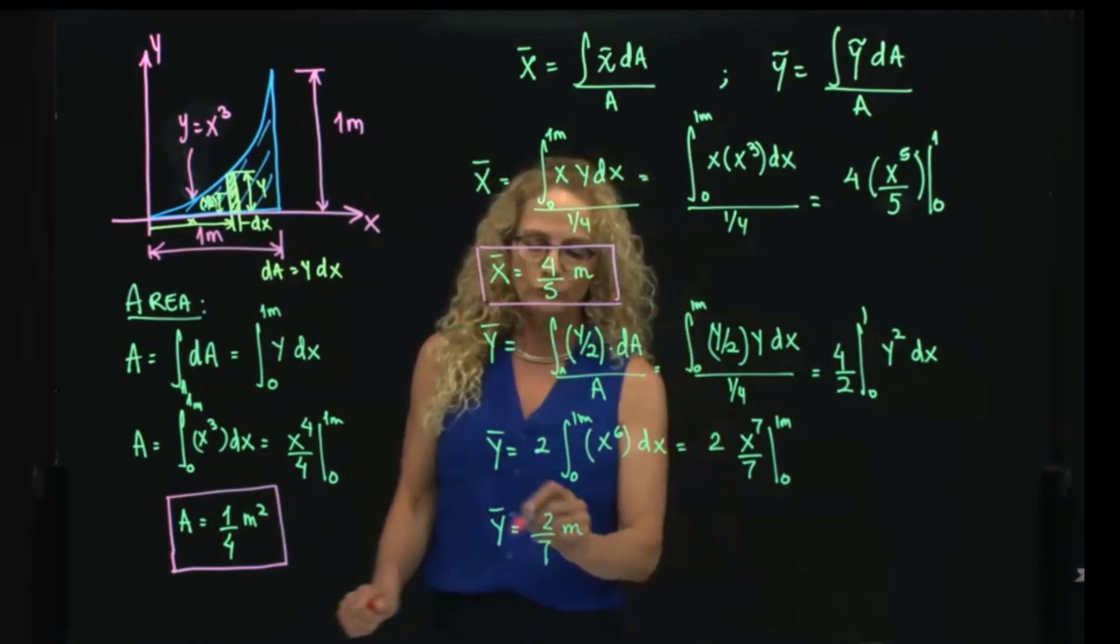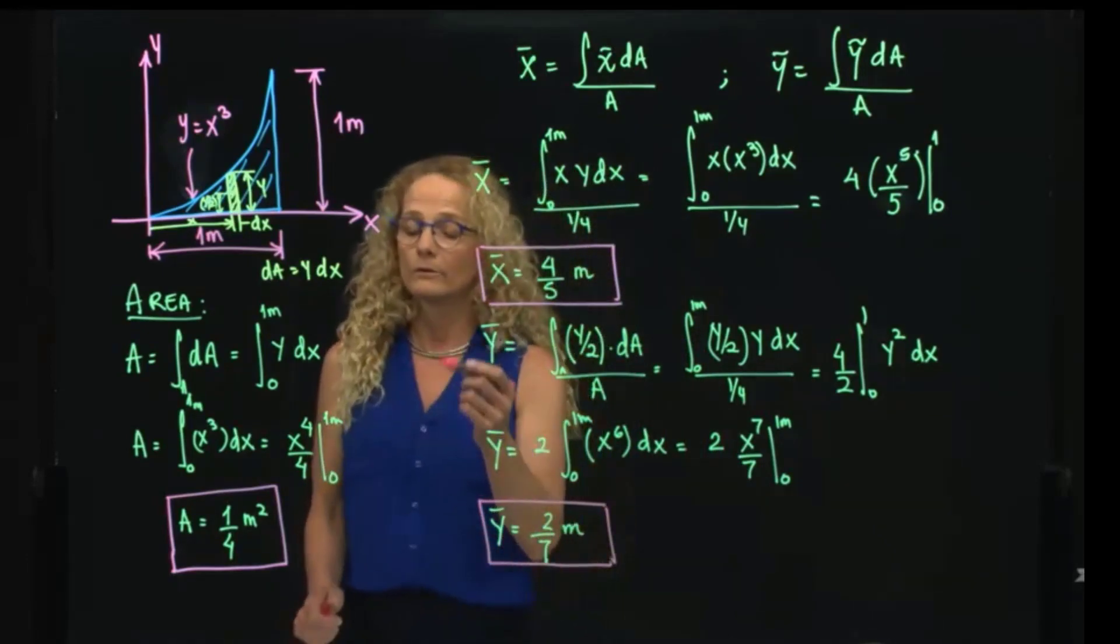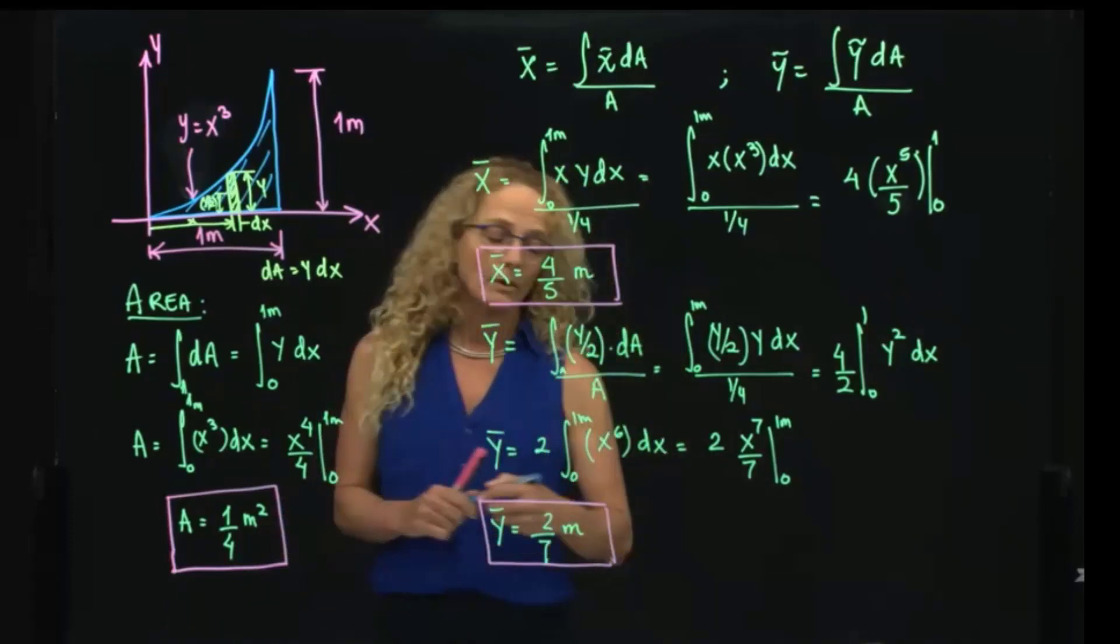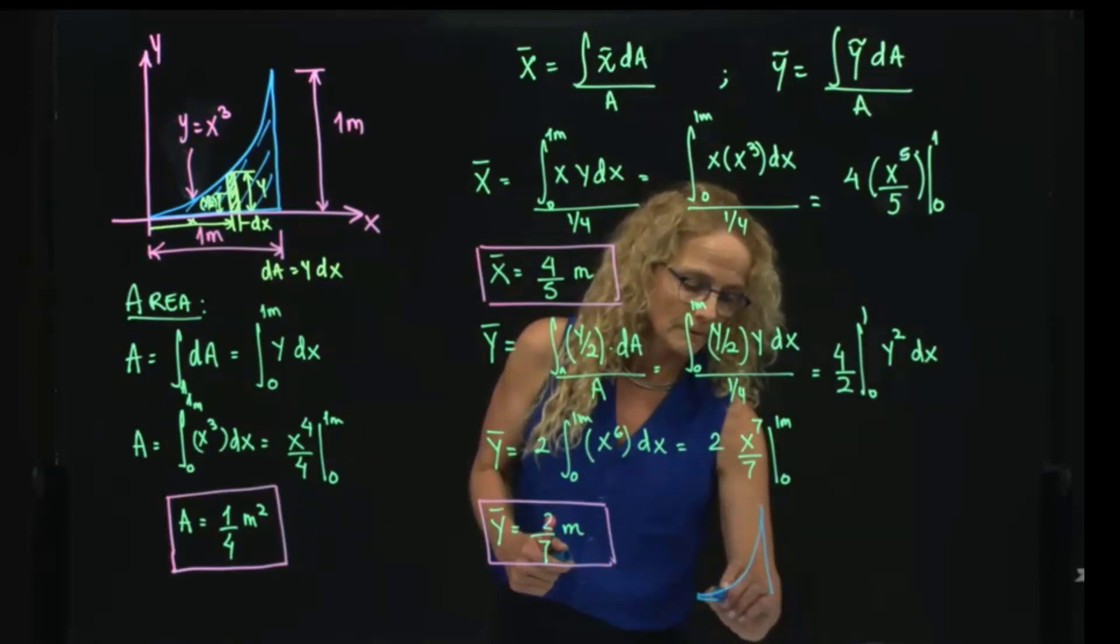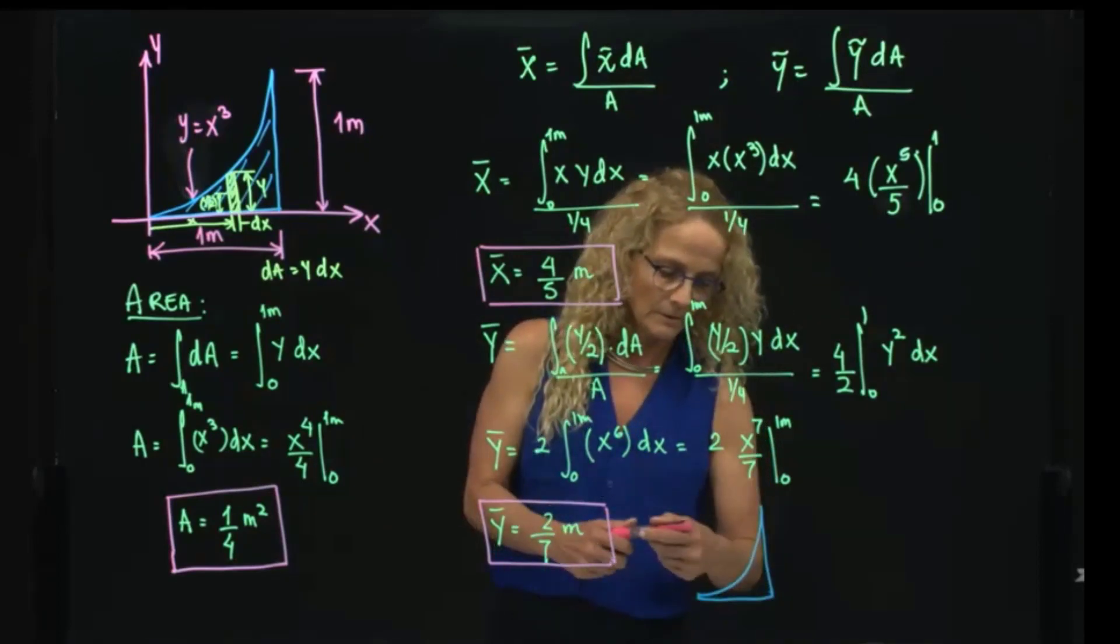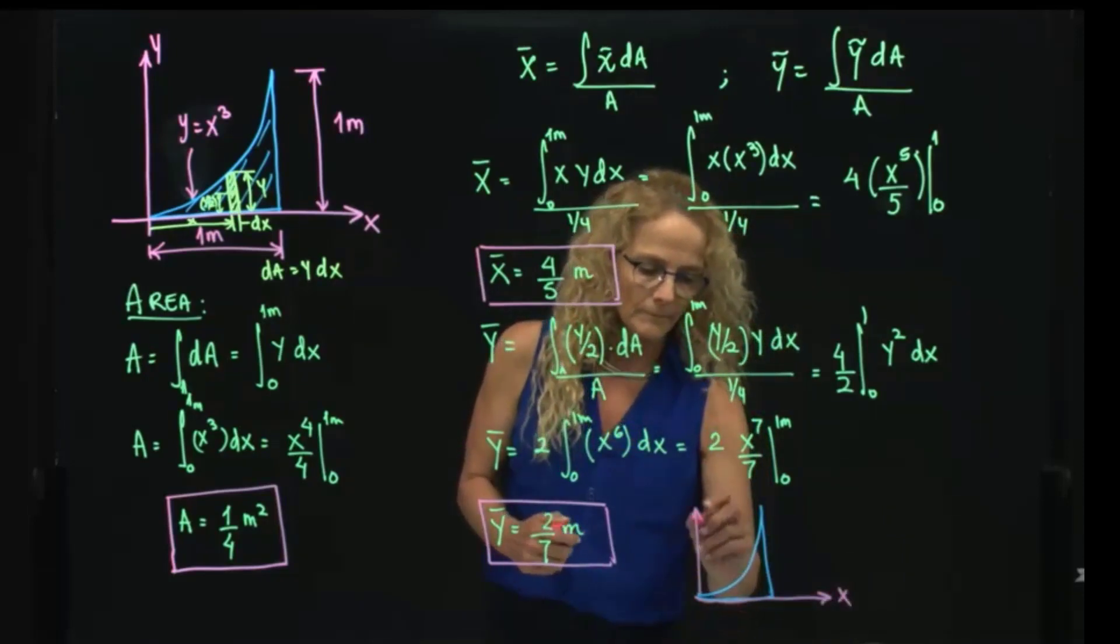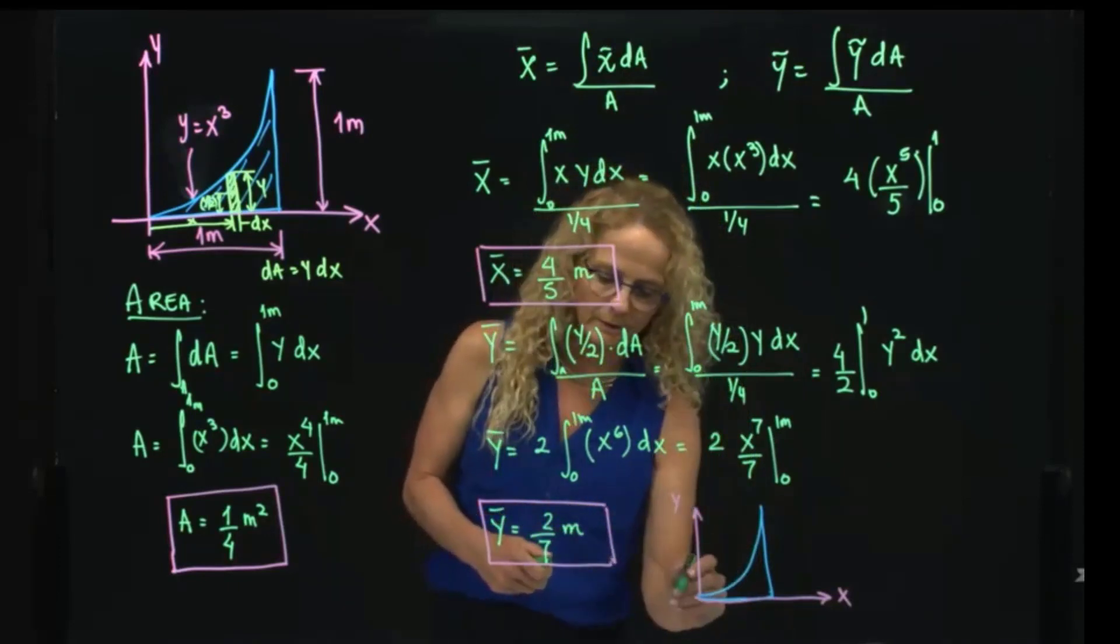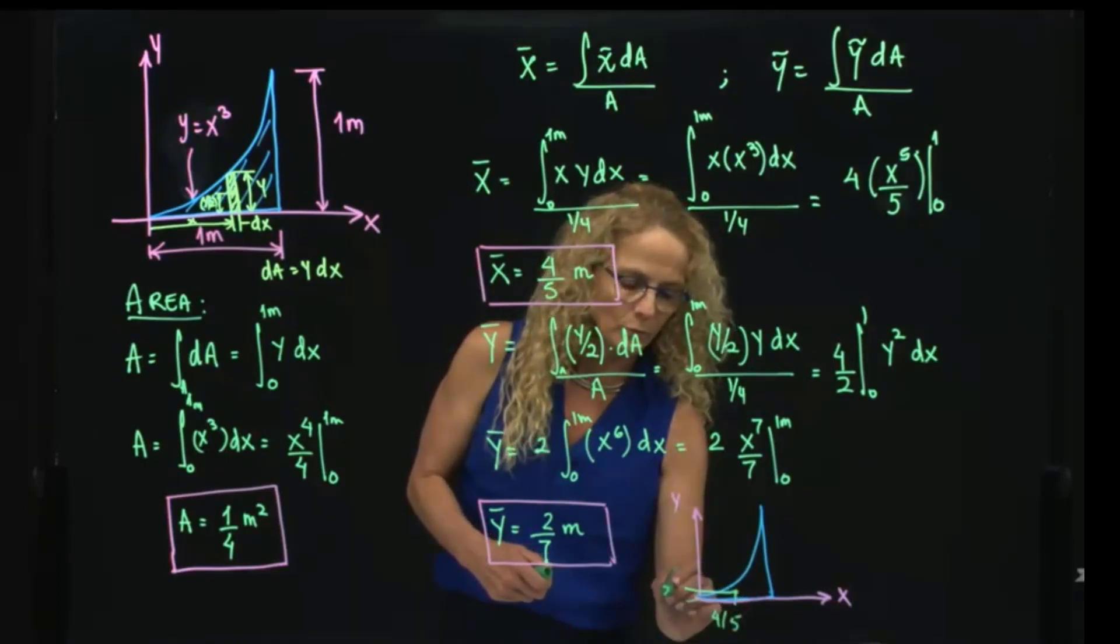And that's the centroid of my figure. So the centroid means that for this plate, x̄ and ȳ, the centroid is located at somewhere over here, which this is 4 fifth, and this is 2 seventh.